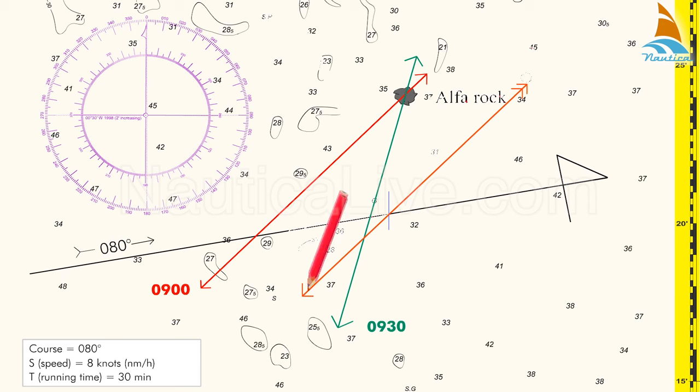As we notice, the two LOPs intercept at the point RF. This is our running fix position.